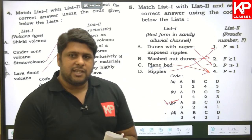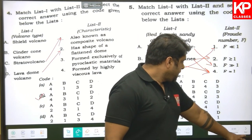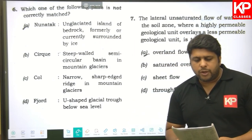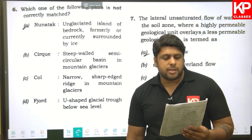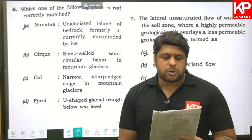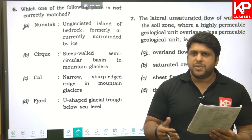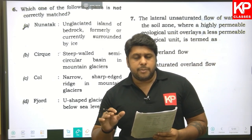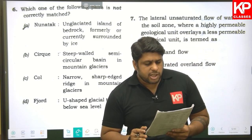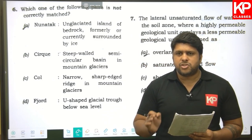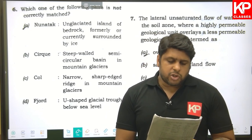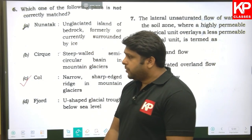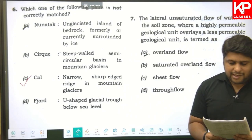Question six: which of the following pairs is not correctly matched? Nunatak — an unglaciated island of bedrock surrounded by ice — this is correct. Cirques are steep-walled semi-circular basins in mountain glaciers — this is correct. Col — a narrow sharp-edged ridge in mountain glaciers — this is wrong. A col is actually a pass or gap, not a ridge. So our answer is C.